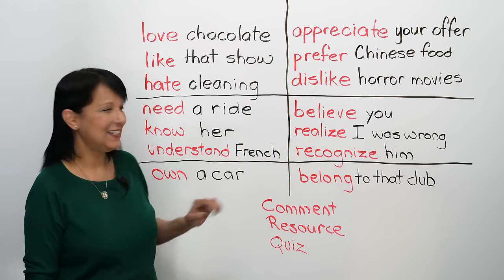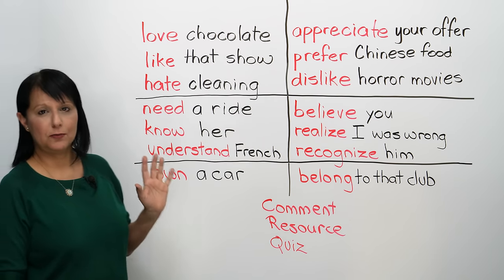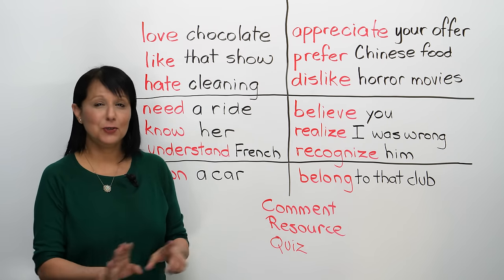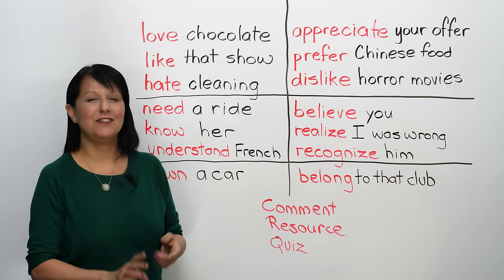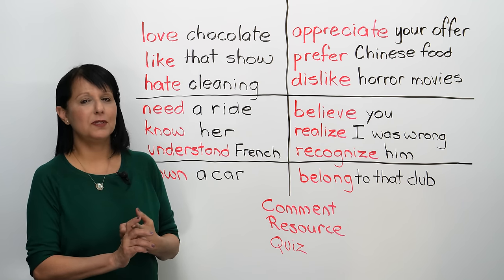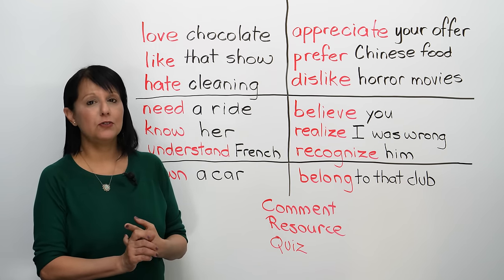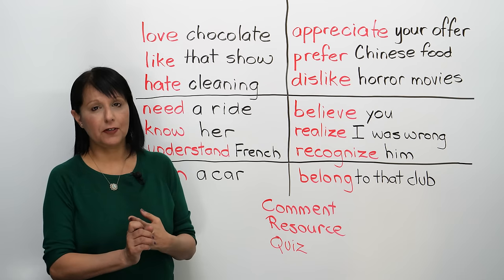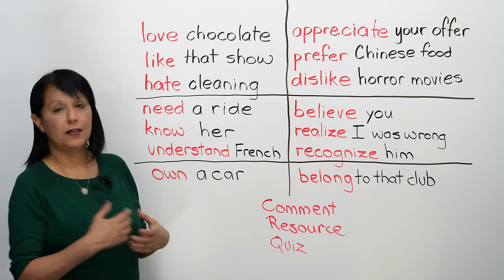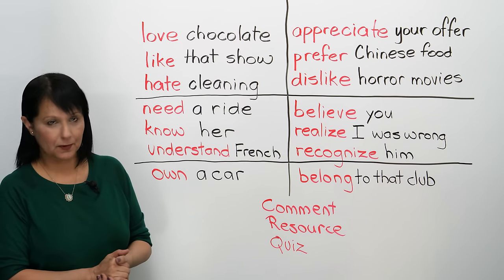So let's say these again: I appreciate, I prefer, I dislike, I believe, I realize, I recognize, I belong. You've just learned 14 stative verbs that you will always from now on never use in the continuous form. You can use them in the simple form — present or past — and you can also use them in the perfect form, like I have done something or I had done something.